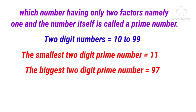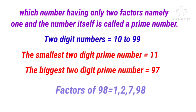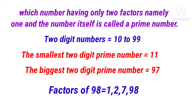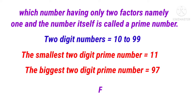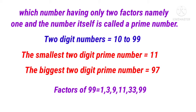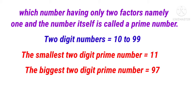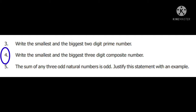The biggest 2-digit prime number is 97. Because 98 has factors 1, 2, 7, 14, 49, 98, and 99 has factors 1, 3, 9, 11, 33, 99 – both are composite numbers. So 97 is the biggest 2-digit prime number.